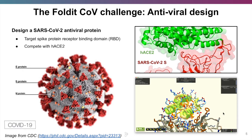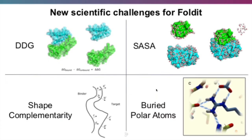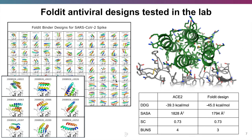This is a straightforward problem for us to set up in Foldit. We provide players with the structure of the spike protein, then challenge them to design a brand new protein with a complementary shape to the spike. If the shape is good and complementary to the spike target, our designed protein will stick to the spike more tightly than the human ACE2 receptor protein, and that could block infection. We started these puzzles in late February, and by the end of March we had generated about 100 Foldit player designs worth testing in the lab.